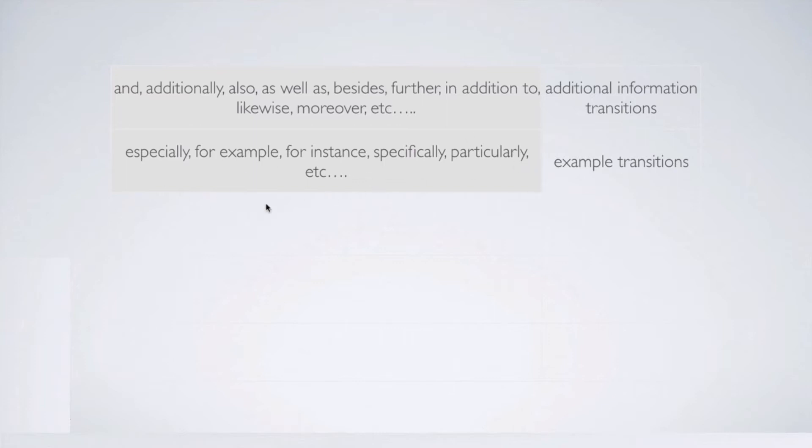The next transitions are example transitions, such as: especially, for example, for instance, specifically, particularly, etc. So if you see one of those words, it means that this sentence is about examples. So you need to know what is the logical place for examples.